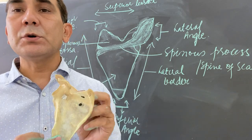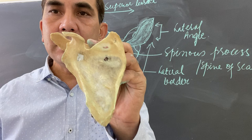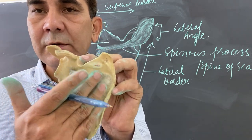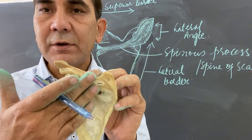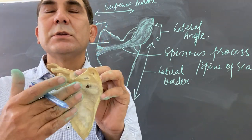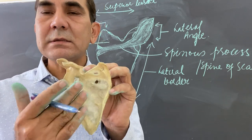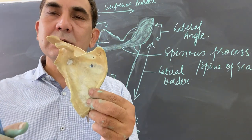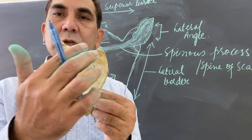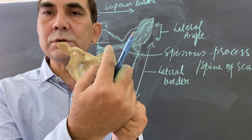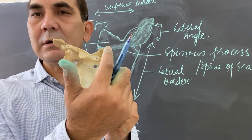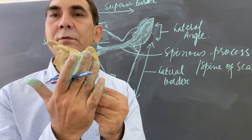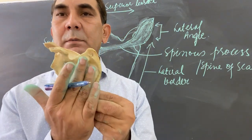Now we will look at the anterior surface of the scapula. On the anterior surface of the scapula, there is no spinous process and no foramen. There is a fossa here called the subscapular fossa. This subscapular fossa faces towards the ribs. The scapula covers from the second rib to the seventh rib on the anterior portion.